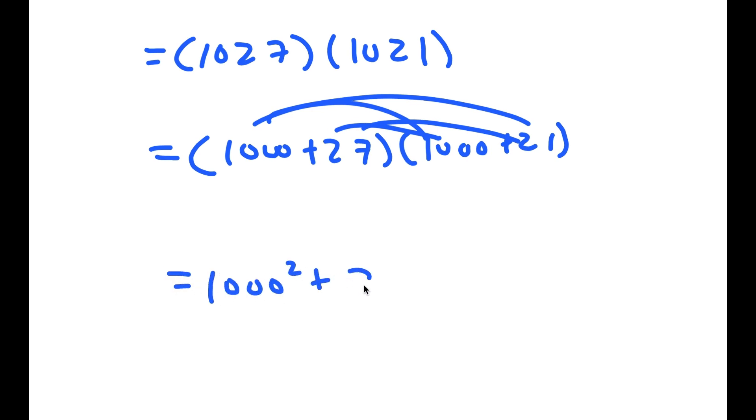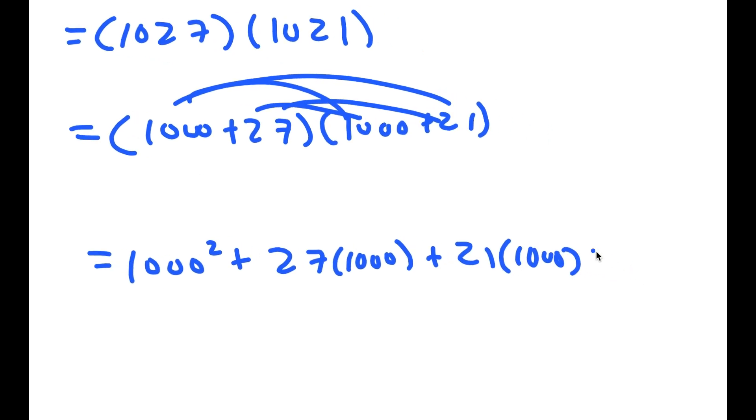So I get 1000 squared plus 27 times 1000 plus 21 times 1000 plus 27 times 21.